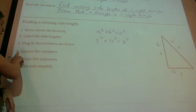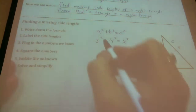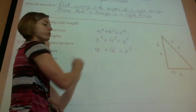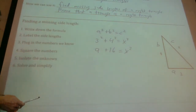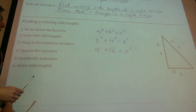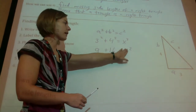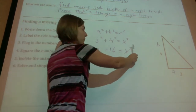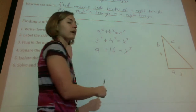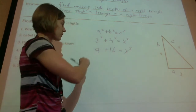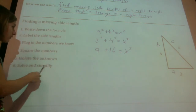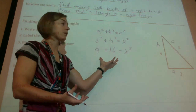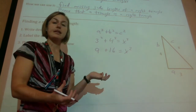After squaring, things are looking a little more simple. Step five: isolate the unknown. X is actually already by itself here — we don't have anything else going on except for the squaring, which we can't get rid of until the end. Step six: solve and simplify. We need to combine these together to decide what X is, so 9 plus 16 is 25.